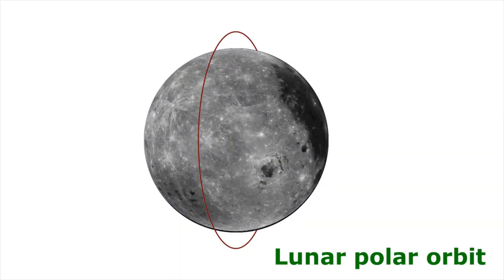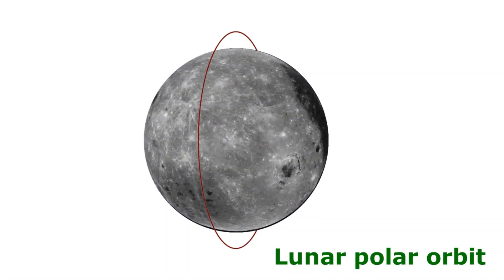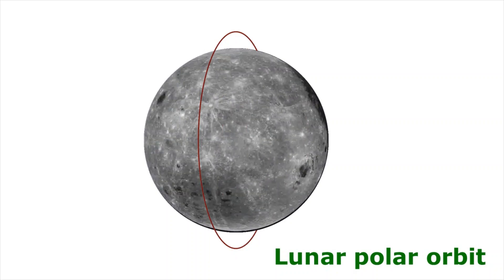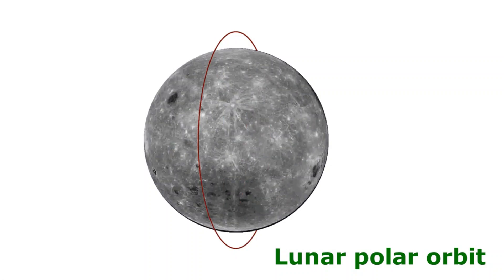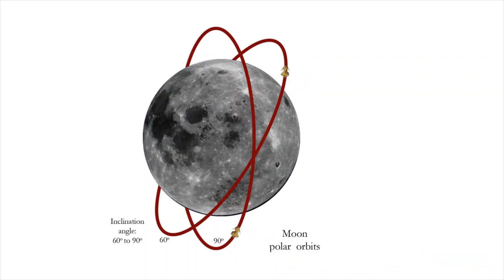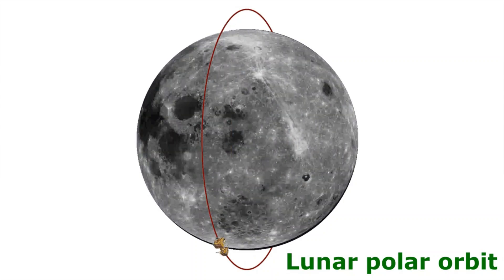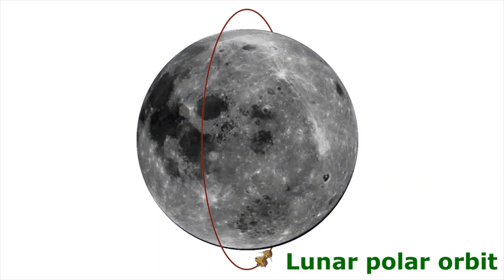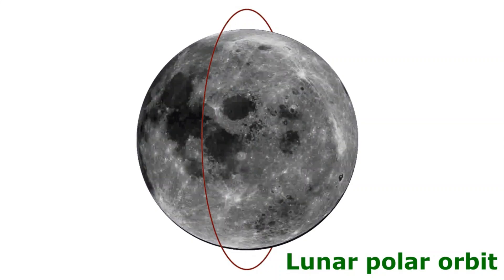A lunar polar orbit is one in which a satellite passes above both poles of the Moon on each orbit. That is, the plane of the orbit should have an inclination of 90 degrees with respect to the lunar equatorial plane. Orbits with an inclination up to 60 degrees are also defined as polar orbits. A spacecraft in lunar polar orbit could observe or photograph the entire Moon including the equatorial areas. Therefore, for mapping the Moon, the spacecraft should be in polar orbit.